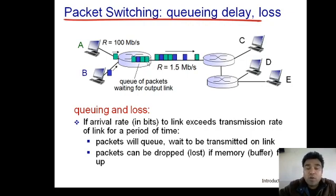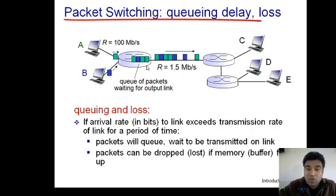The queuing delay for the first packet in the queue is zero because there are no packets ahead of it. The second packet in the queue, however, must wait for the first packet to be fully transmitted, so its queuing delay equals the transmission delay of the first packet, which is L/R. Once the first packet has been completely transmitted onto the link, the queuing delay for the first packet becomes zero.